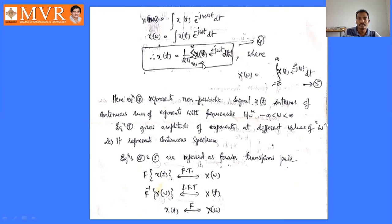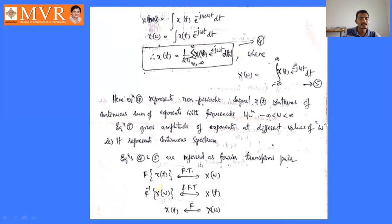Equation four represents the non-periodic signal x(t) as a continuous sum of exponentials from −∞ to ∞. Equation five represents the amplitude of exponentials at different values of ω, i.e., it represents the continuous spectrum. Equation four is the inverse Fourier transform (the signal), and equation five is the Fourier transform (the spectrum). These two together are referred to as the Fourier transform pair.